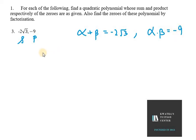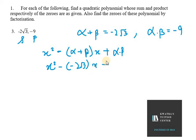Now we know that a polynomial can be written in the form x² - (α + β)x + α·β. So x² minus α + β which is -2√3 x, plus α·β which is -9.